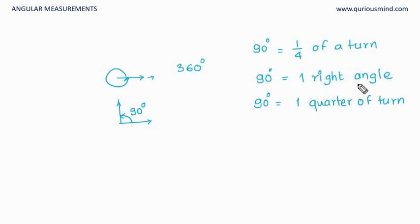Thus you can see 90 degrees is represented in different formats: one-fourth of a turn, one right angle, or one quarter of a turn. We will use these terminologies in many of our sums later. Let's also talk about directions now.